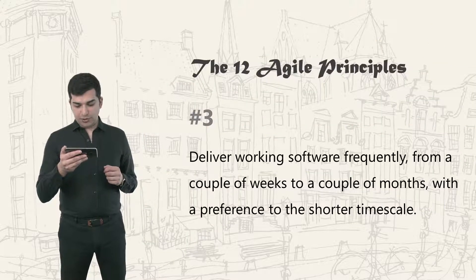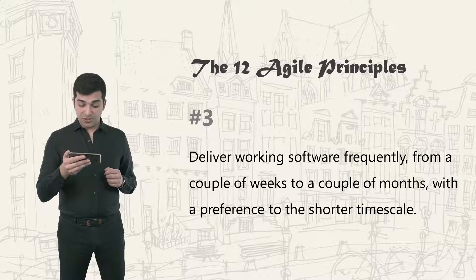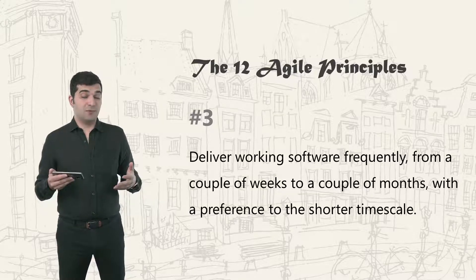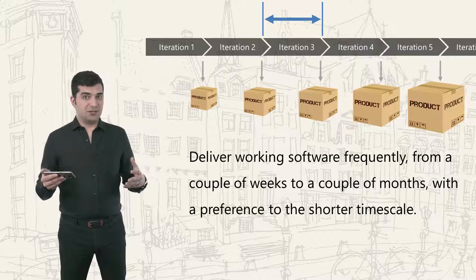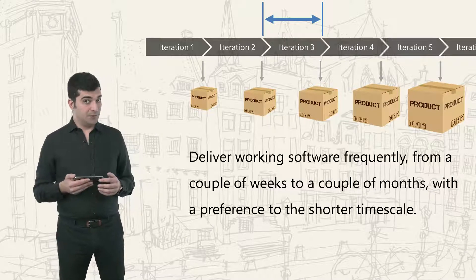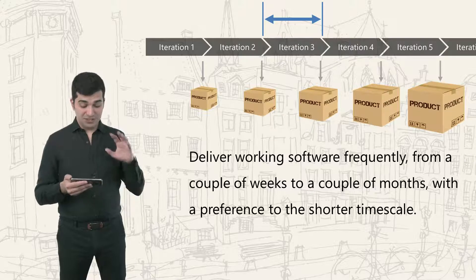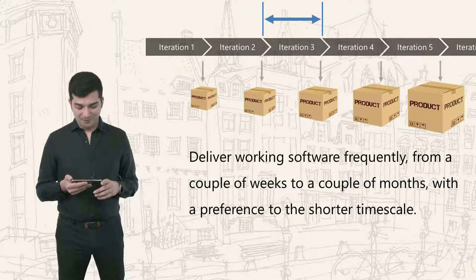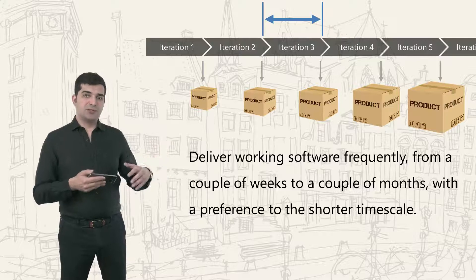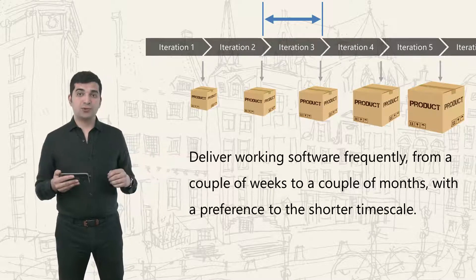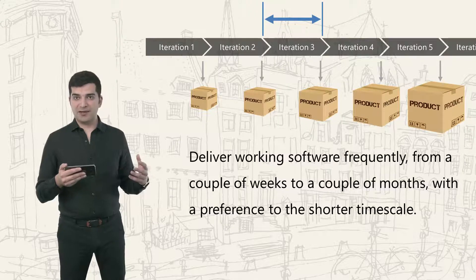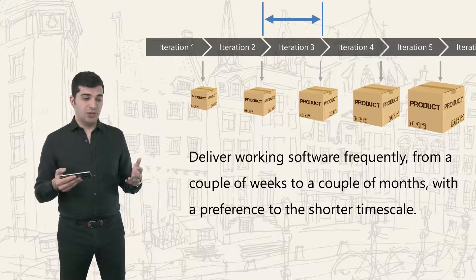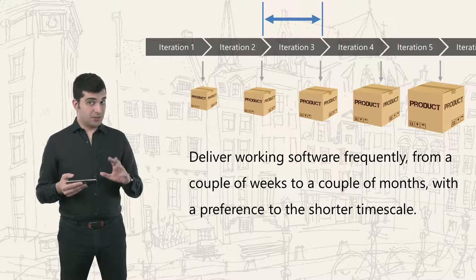The third principle: deliver working software frequently, from a couple of weeks to a couple of months, with a preference to the shorter timescale. Nowadays a two-month iteration might seem long, but when these principles were written it was considered short. In Scrum, for example, the maximum is one month, and shorter iterations are usually better.